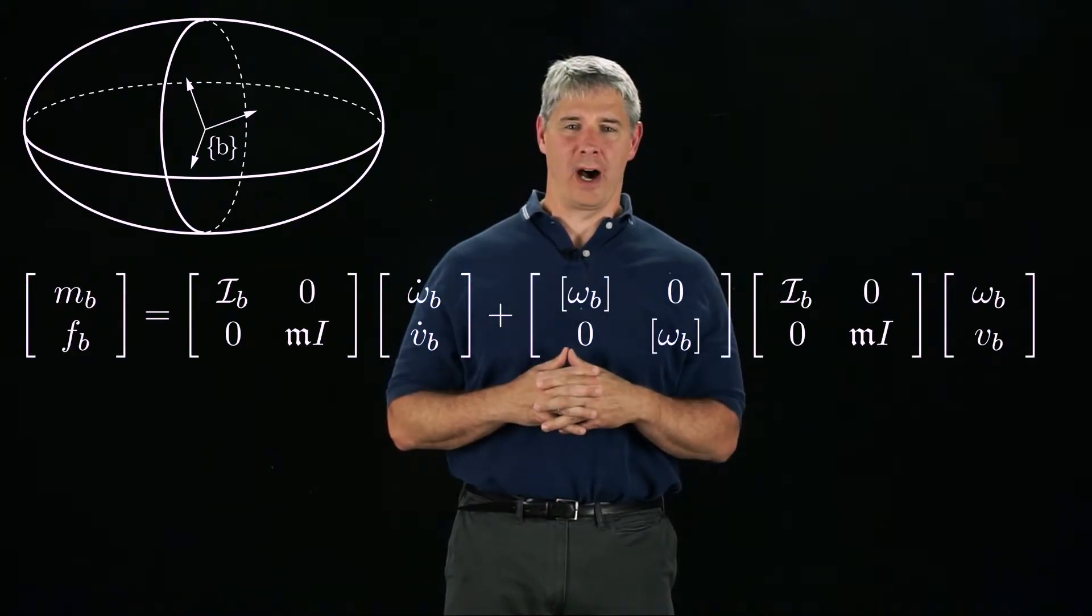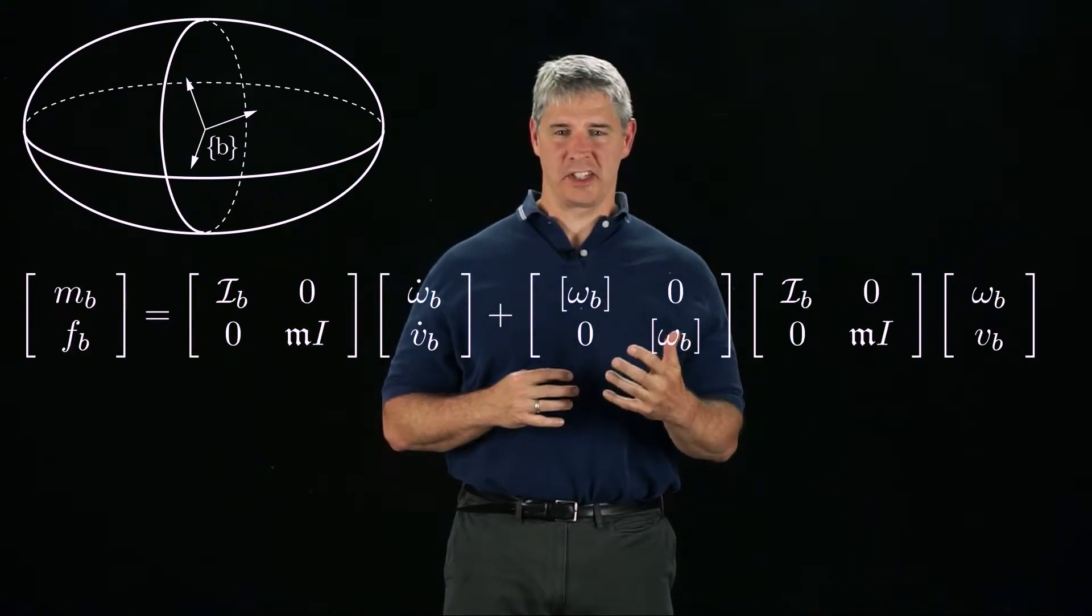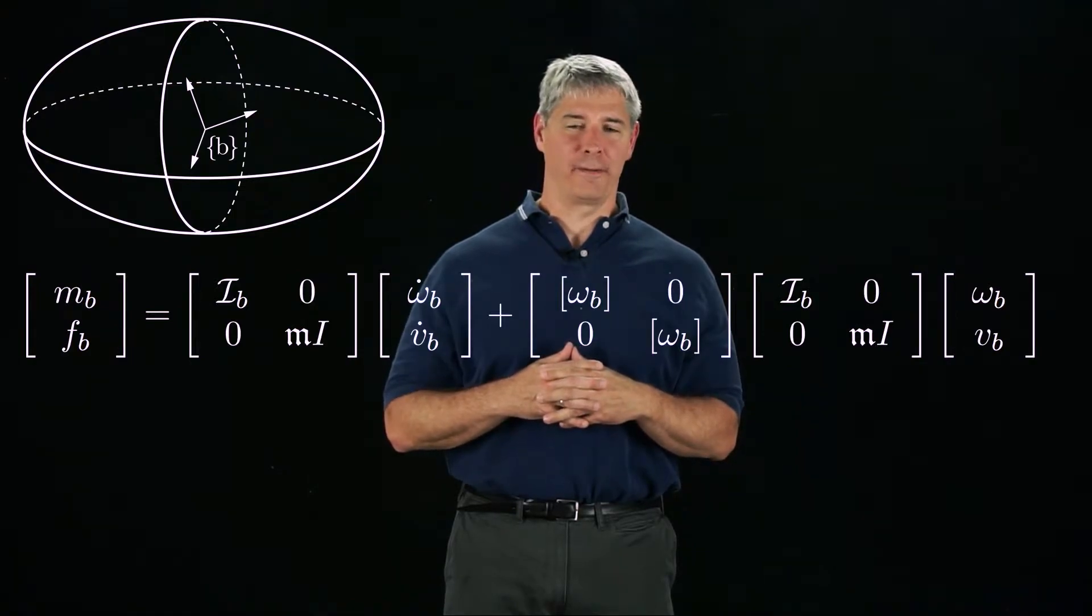In the previous video, we derived these equations of motion for a rigid body, for wrenches, twists and accelerations defined in a body frame B.